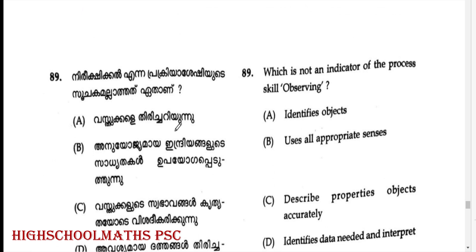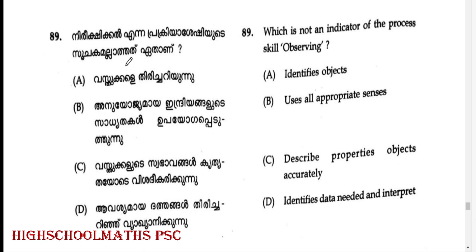Which is not an indicator of the process skill of observing? Answer: Option D — 'Identifies data needed and interpreted' is not an indicator of the process skill of observing.